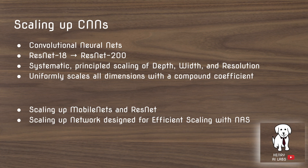So what's meant by scaling up convolutional neural networks? One way of scaling up a CNN might be to just add more layers — for example, going from ResNet-18 to ResNet-200.